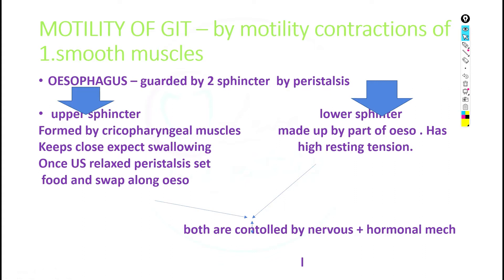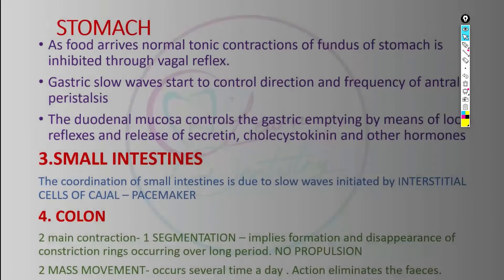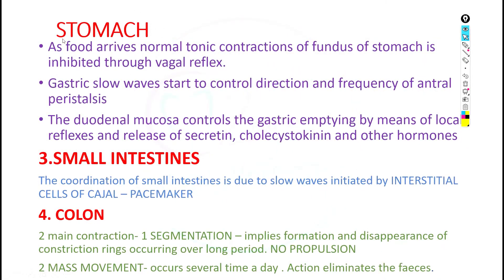During swallowing, the upper sphincter opens and peristalsis moves the food bolus along the oesophagus. The lower sphincter is made up of a part of the oesophagus and has a high resting tension. Both upper and lower sphincters are controlled by nervous as well as hormonal mechanisms.